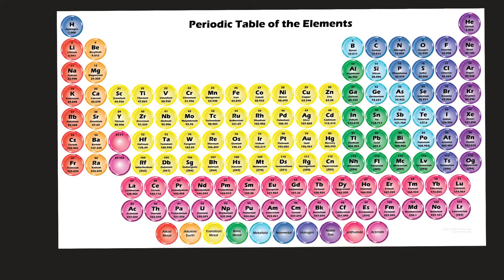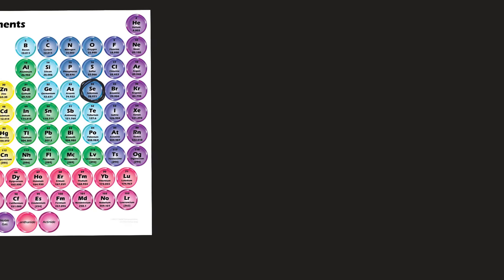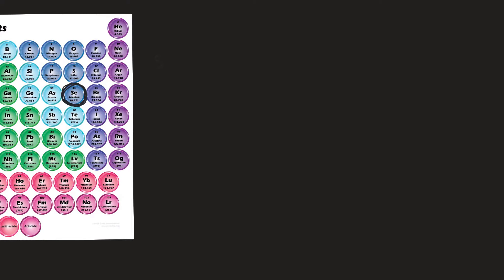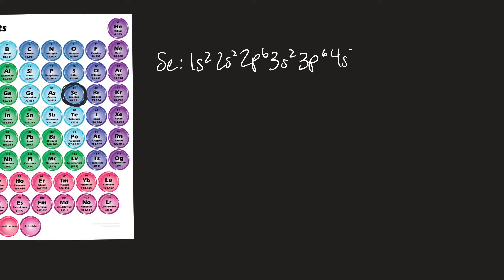Let's look at the element selenium. Its electron configuration is 1s2, 2s2, 2p6, 3s2, 3p6, 4s2, 3d10, 4p4. We always pull valence electrons from the highest energy level, so we see that selenium has 6 valence electrons — not the full 8.